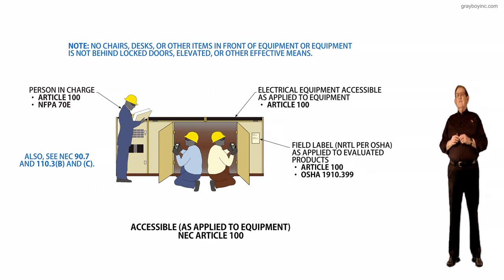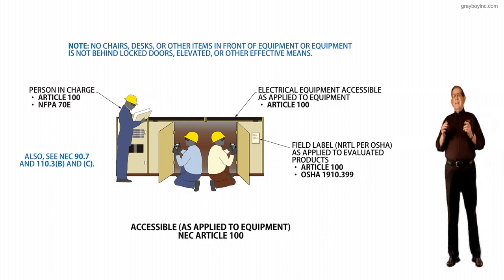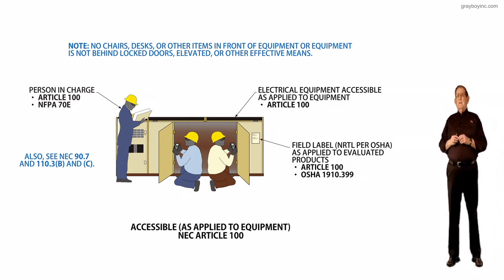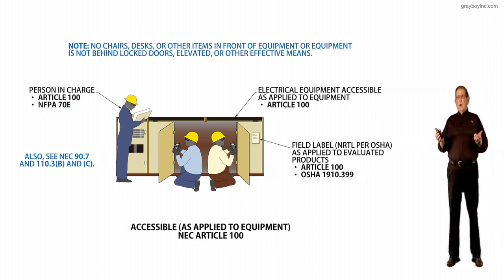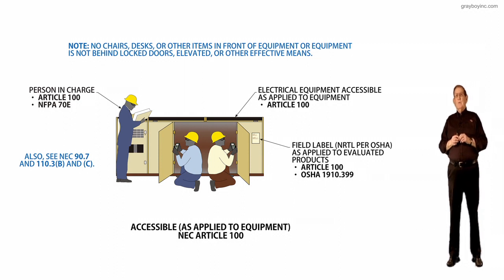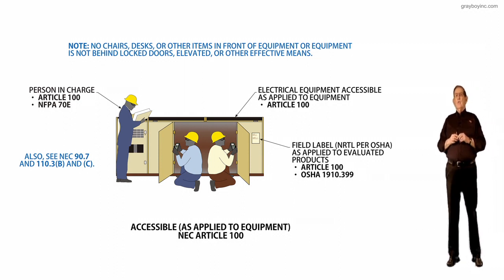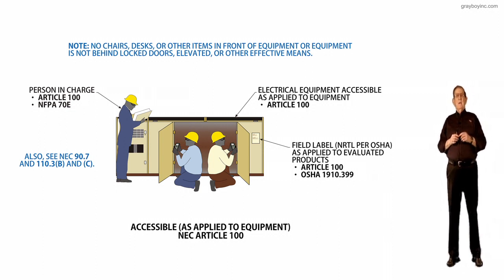Secondly, electrical equipment has to be accessible as applied to electrical equipment. Thirdly, a label has to be placed on the equipment. And if you put a label on it per OSHA, then it would also have to be accessible and readable. We can find those regulations in Article 100 and OSHA 1910.399.